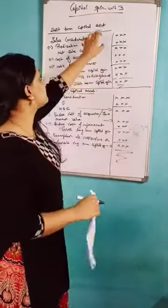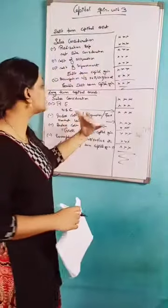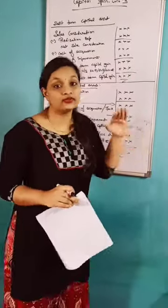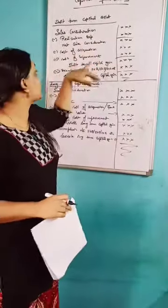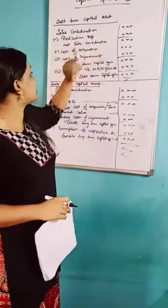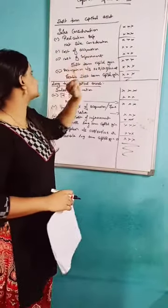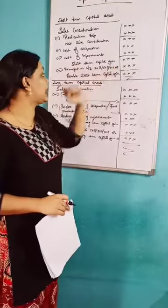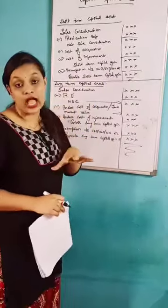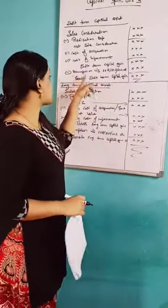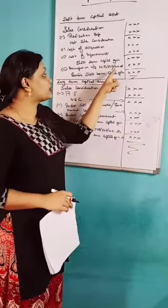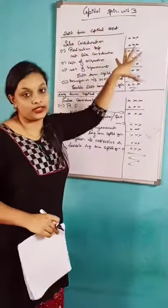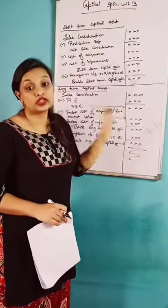Capital gain is divided into two types: short-term capital asset and long-term capital asset. The format for short-term capital asset is: sales consideration, less realization expenses, less cost of acquisition, less cost of improvement — total gives you short-term capital gain. Based on the question, you write the exemptions under section 54B, 54D, 54G, etc., to get taxable short-term capital gain.